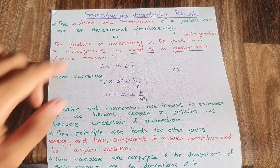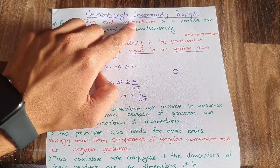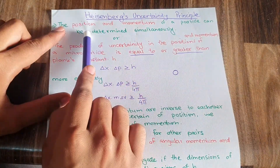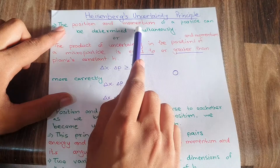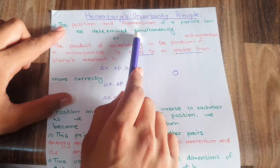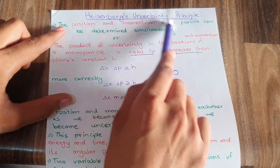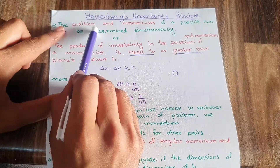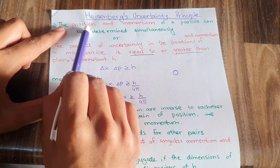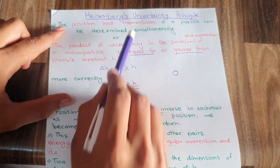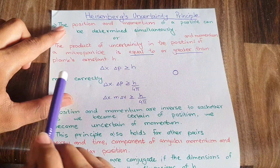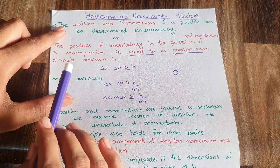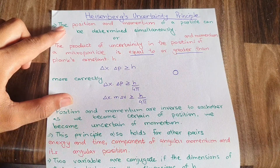If we take two quantities like position and momentum, so if we become certain about the position of a particle, then we become uncertain about the momentum of a particle. The word 'simultaneously' has deep impact — if I want to find the position and momentum of a particle at the same instant, simultaneously, then I can only be certain about one thing and I will become uncertain about the other.